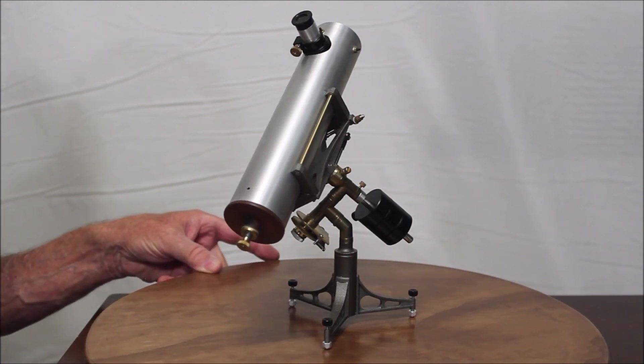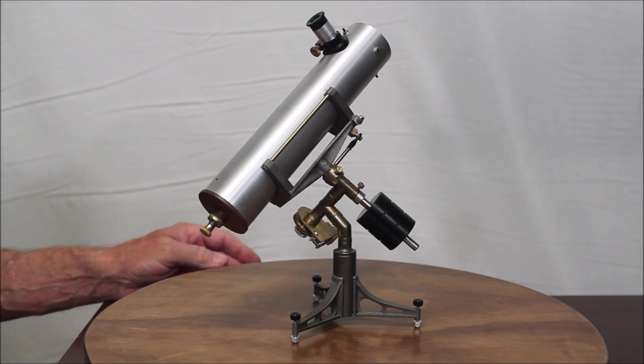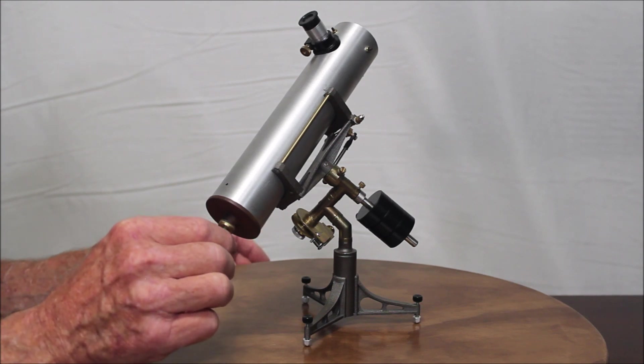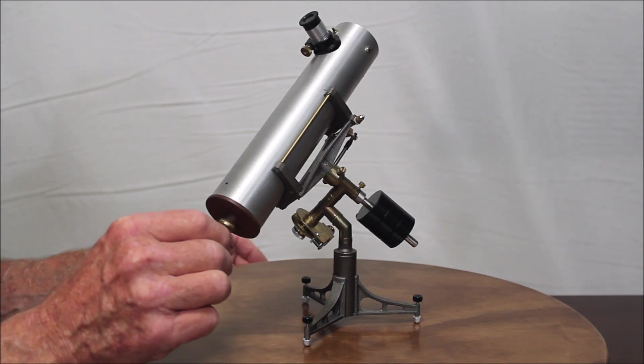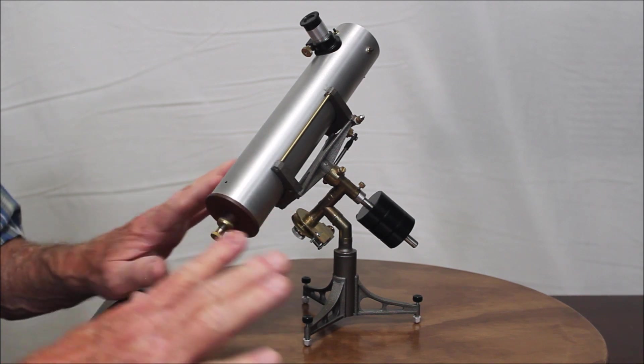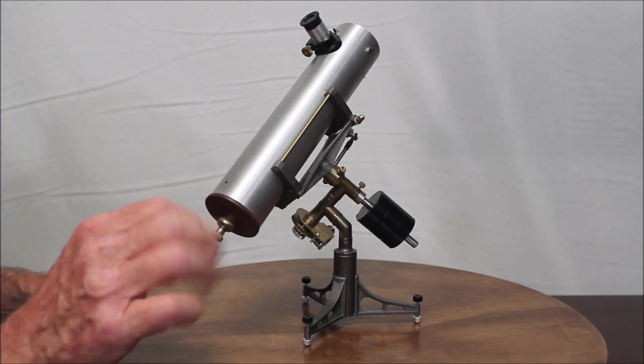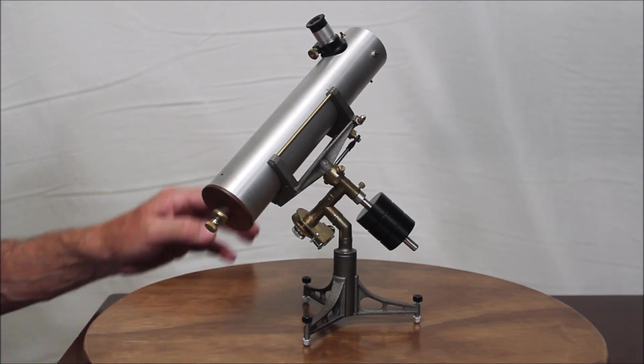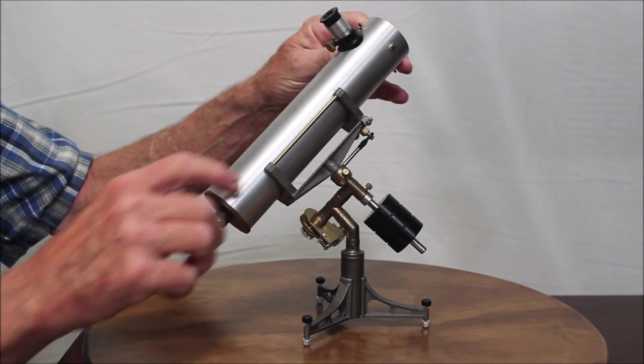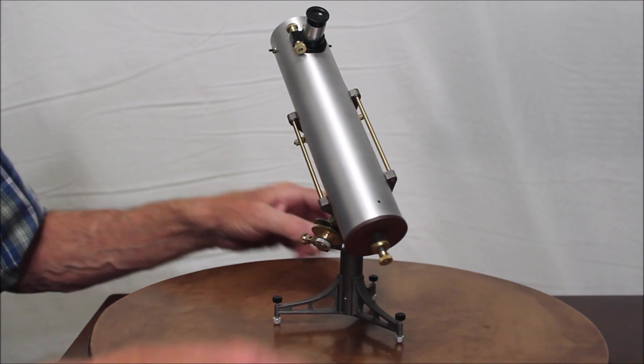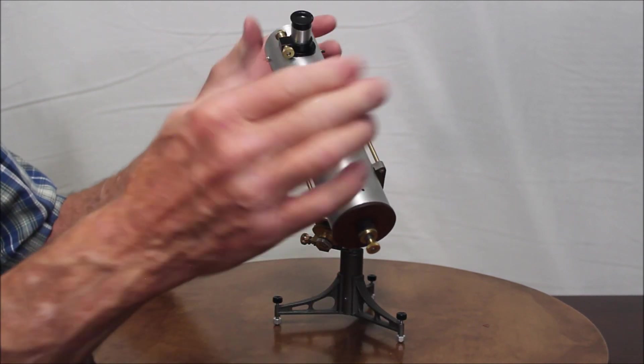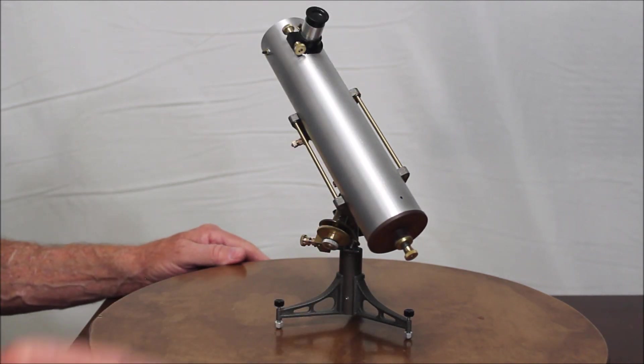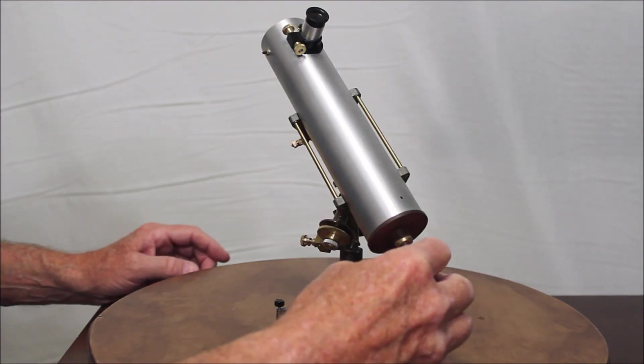Now of course seeing as how it's not really a model, things don't exactly work the same. For example this is the focuser for the telescope. What's happening inside there, Jim has done a beautiful job machining this thing. The mirror is mounted and when you turn this it actually moves the mirror back and forth. This although it looks like a focuser, this is not really a focuser. That part is a model. So it doesn't really work. It doesn't move the eyepiece in and out.